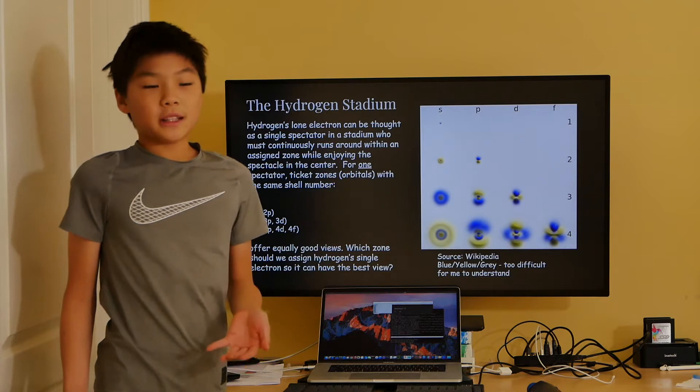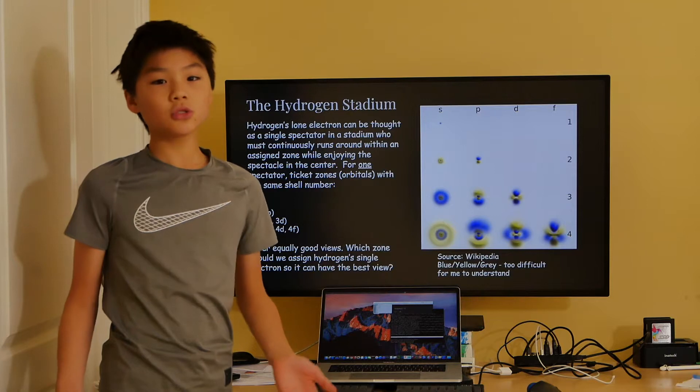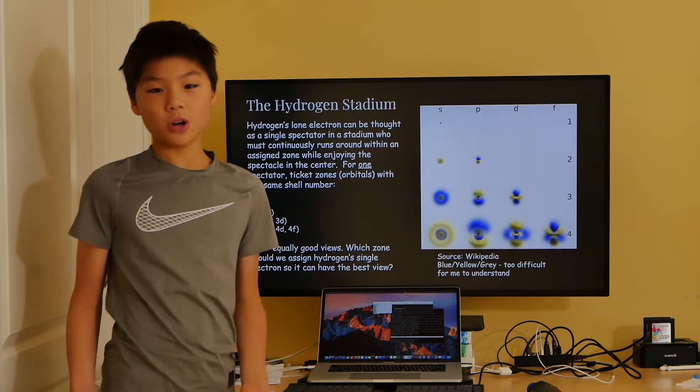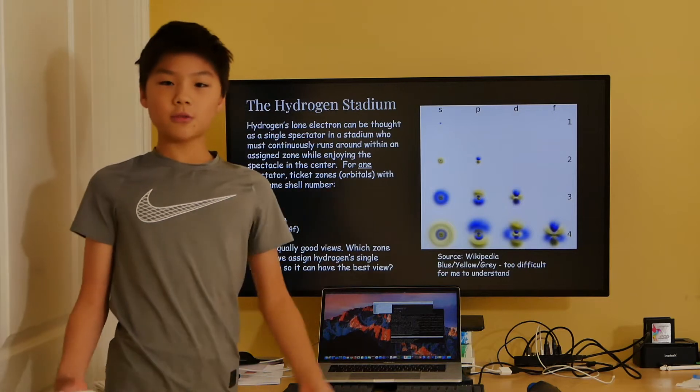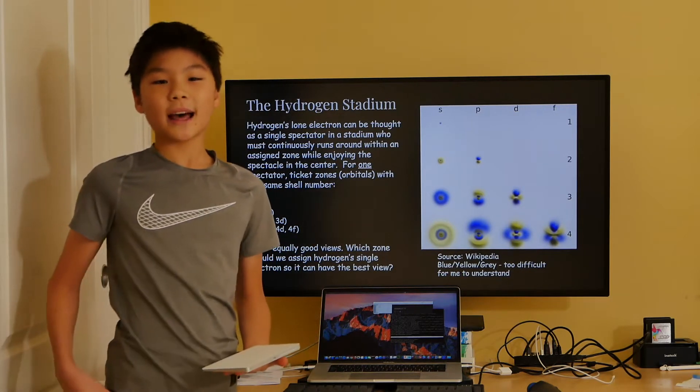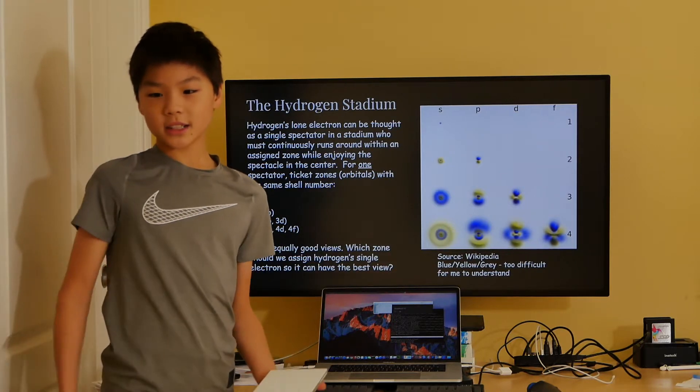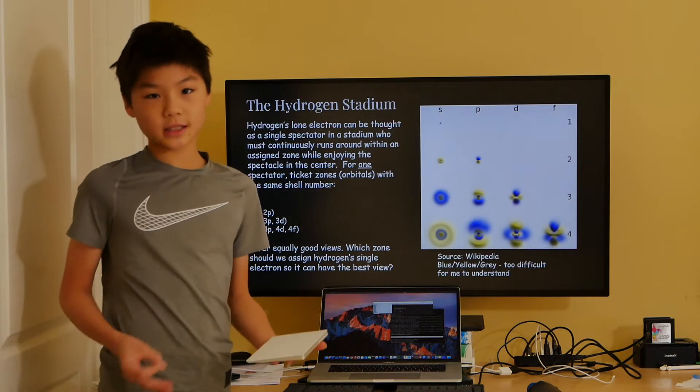The number in these names correspond to the shell to which they belong to. Zones or orbitals with the same shell number are considered to offer equally good views. So supposing we are in charge to assign hydrogen a single electron so that it has the best possible view of the center, where should we assign it to? Obviously 1s, because 1s is the closest to the center.